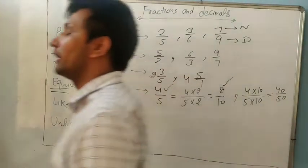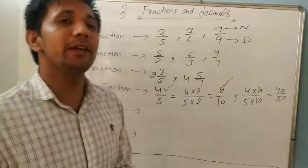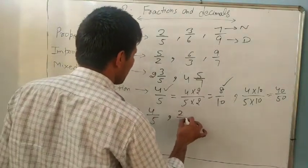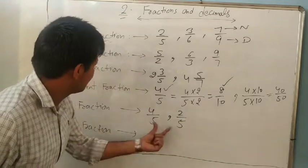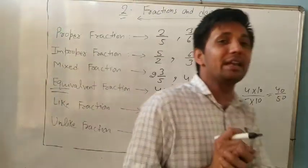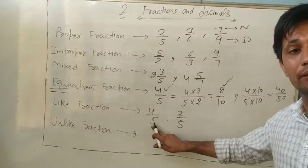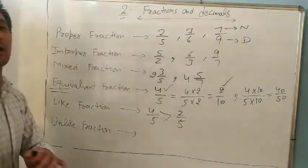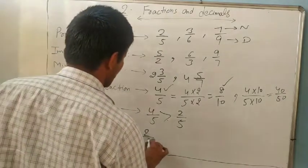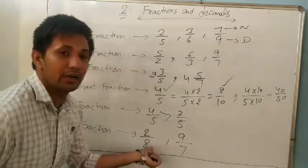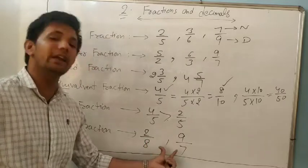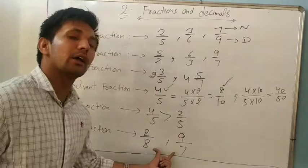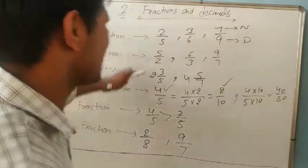Like fractions are fractions where the denominators are the same. For example, 4/5 and 2/5 have the same denominator, so they are like fractions. When denominators are the same, you can easily compare — 4/5 is greater than 2/5. Unlike fractions have different denominators, like 2/8 and 9/7. It is difficult to compare them directly, so we first convert them into like fractions.